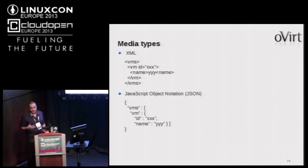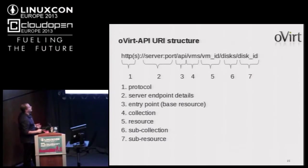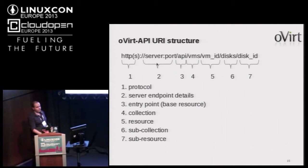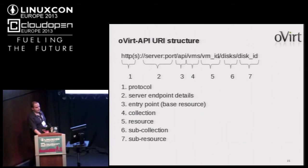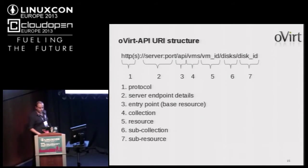Looking at the URI structure of our REST API: you have the protocol (HTTP or HTTPS), the server and port, the API entry point, then a collection — for example the VMs collection — then a specific resource inside the collection, then a sub-collection (VMs have disks, so disks are a sub-collection within a specific VM), and then a specific disk resource. It can go on according to the collections and sub-collections you have.